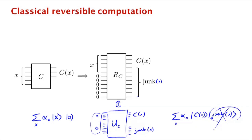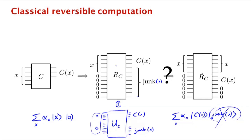The junk(x) we don't want — can't we just throw it away? We'll argue that this junk is really critical and even if you discard it, it causes trouble due to the rules of quantum mechanics. So this is not the circuit we want. The circuit we want is one that actually erases the junk and in its place leaves the input string x. It takes as input x and zeros, and outputs x as well as C(x) and zeros. This situation is infinitely preferable — we'll see why and how to make it happen.